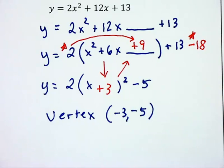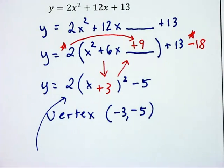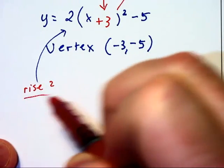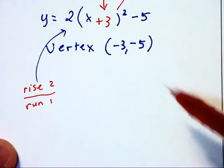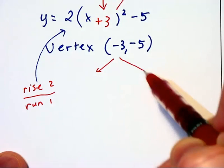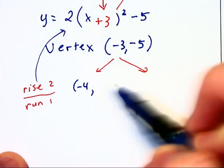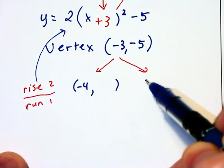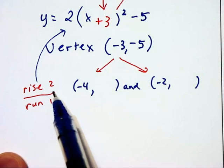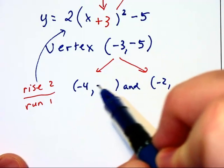If we were to graph this, that 2 out front would tell us with this, what I'm calling kind of slope, that we can rise 2 and run 1 to get to another point. So if we run 1 to the left and to the right, our x-coordinates are going to be negative 4 comma something and negative 2 comma something. Now the rise will be 2, which says add 2 to this negative 5 to get up to negative 3.